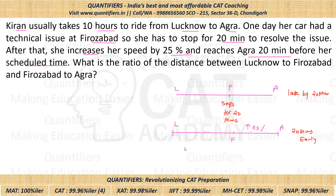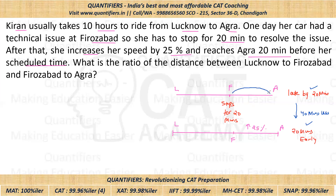In the first case, had she traveled at constant speed, she would have been late by 20 minutes. When she increases her speed by 25 percent she reaches 20 minutes early. The difference between these two cases is 40 minutes — in actual she is taking 40 minutes less.